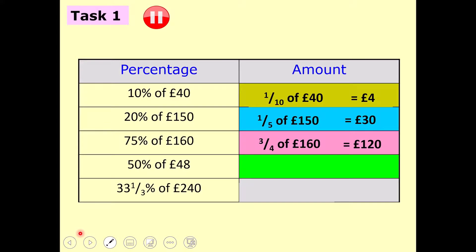Question 4: 50% of £48. We find half of 48 to get £24. Last question: 33 and a third percent. Using your table, 33 and a third is just a third, so find a third of 240, which is £80. Well done if you got all or most of them correct — good work.